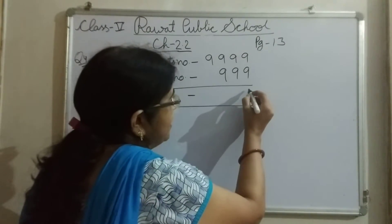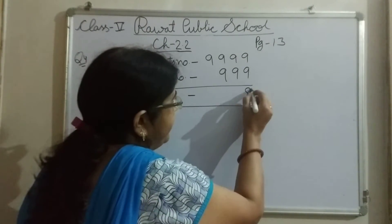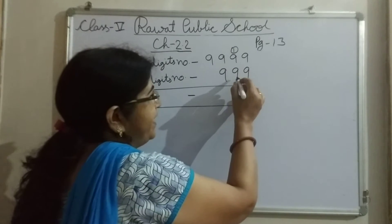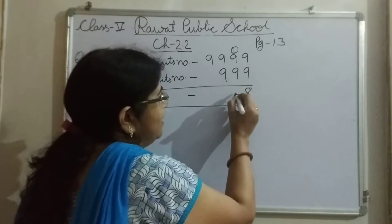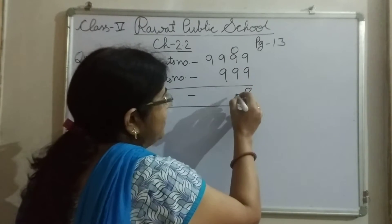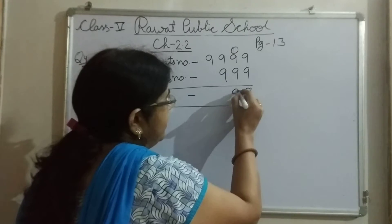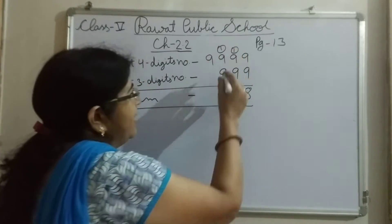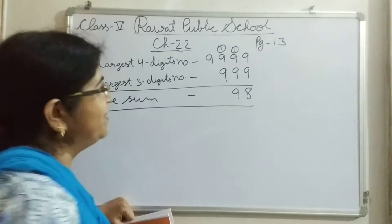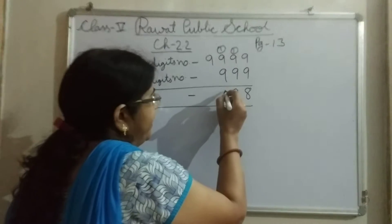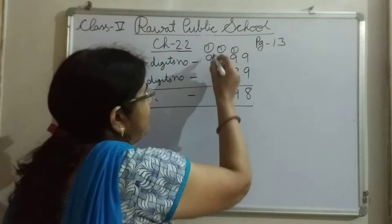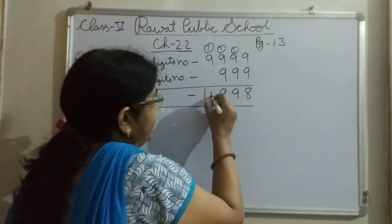9 plus 9 केतना हुआ? 18, 1 carry over. 9 plus 9, 10 plus 1, 18 plus 1 = 19, 9, 1 carry over. 9 plus 9, 18 plus 1 = 19, 9, 1 carry over. 9 plus 1 = 10.